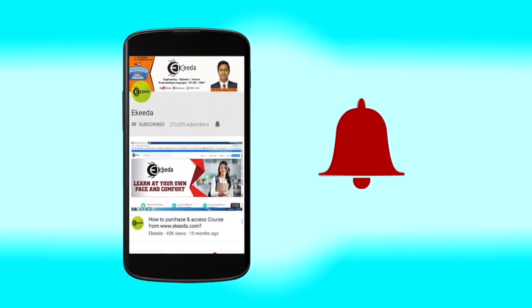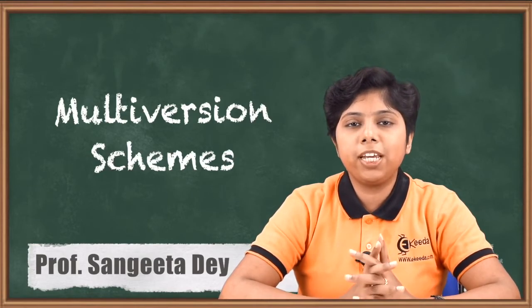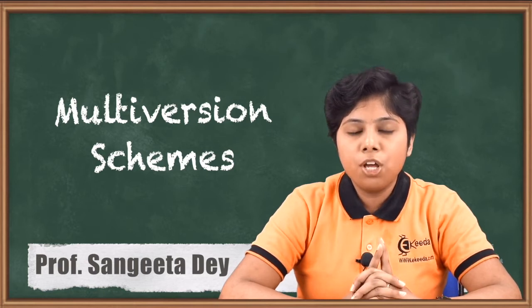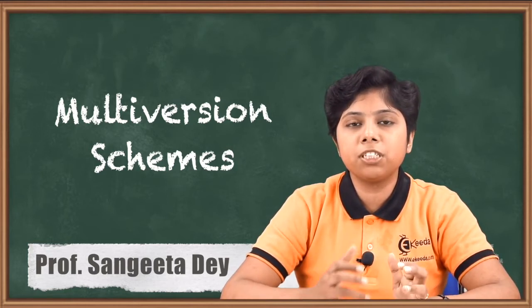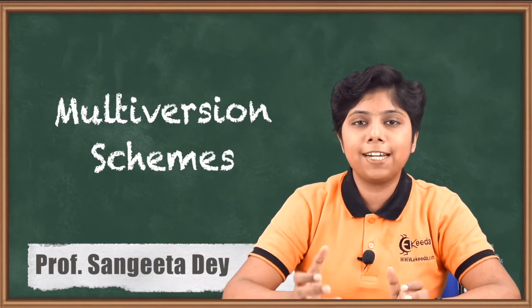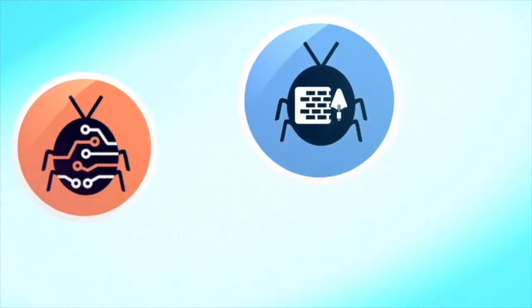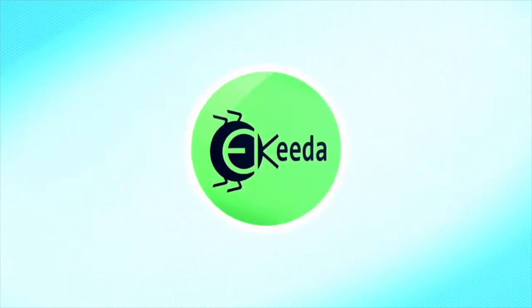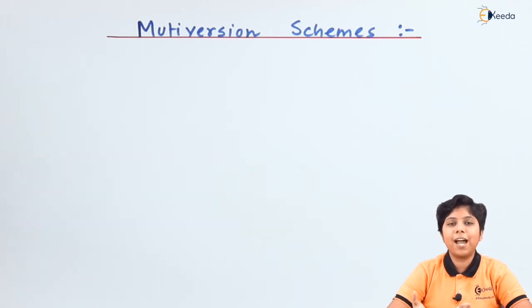Hello friends, today we will talk about multi-version schemes or multi-version concurrency controls. First we will talk about what is the difference with a multi-version data set, then we will introduce multi-version concurrency in controlling the serializability, recoverability, and cascadelessness. We will also see how we can modify this multi-version scheme to have a better approach using validation-based and locking-based protocols.